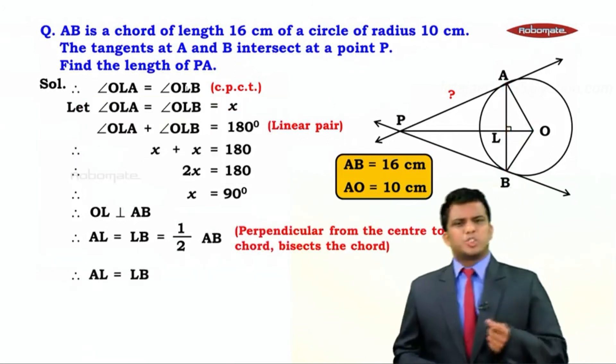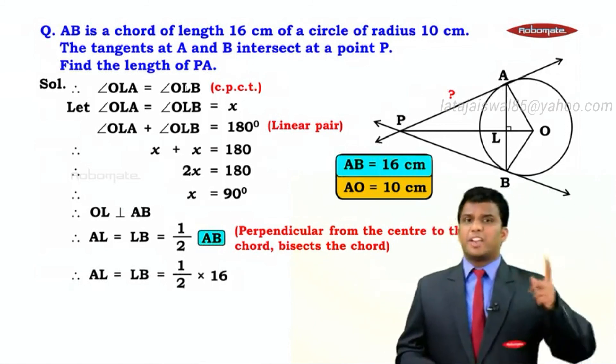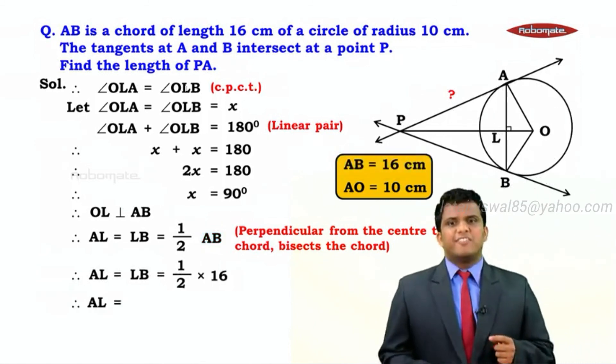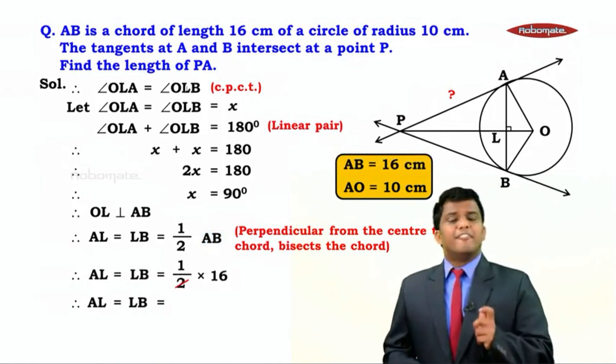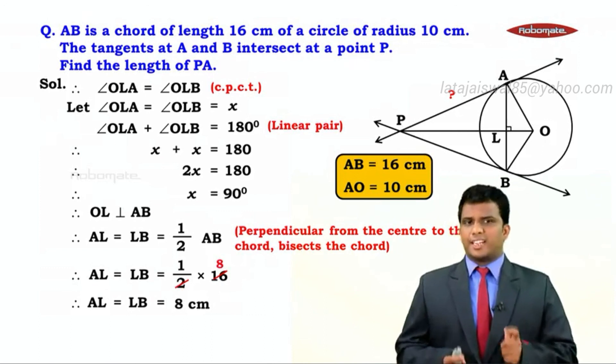Here, we say AL equals LB equals half of 16. Remember, it was given. Half of 16 will give us 8. Hence, we conclude that AL equals LB equals 8 centimeters.